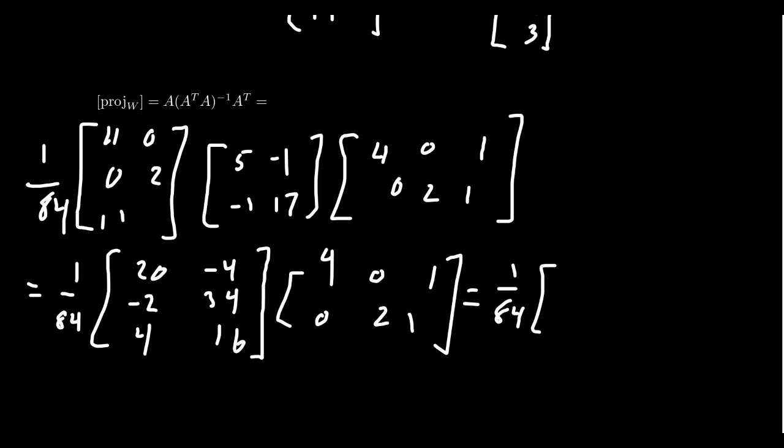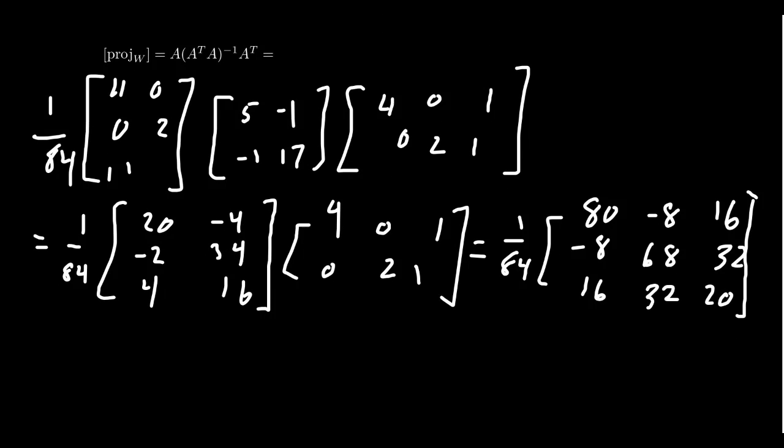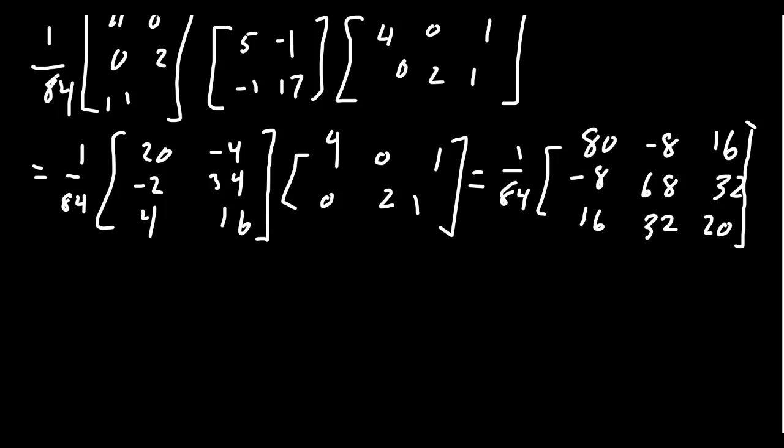If you do this 3 by 2 times the 2 by 3, you end up with 80, negative 8, 16 for the first row. You'll get negative 8, 68, 32 for the next row. And then you get 16, 32, and 20 for the last row. Although nothing is nicely divisible by 84, there are some common factors of like 2 and such. So we can simplify this as 1 over 21 times the matrix 20, negative 2, 4, negative 2, 17, 8, 4, 8, and 5.